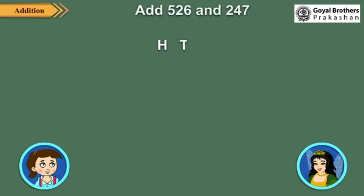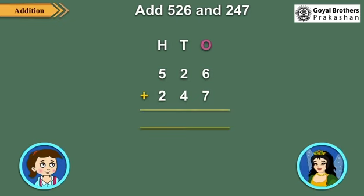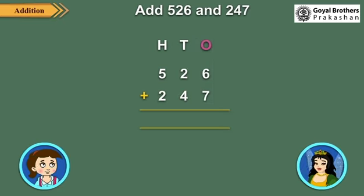Now let us add 526 and 247. First we write the numbers in columns, then add the ones. 6 ones plus 7 ones is equal to 13 ones, which is equal to 1 ten plus 3 ones. So write 3 under the ones column and carry over 1 ten to the tens column.